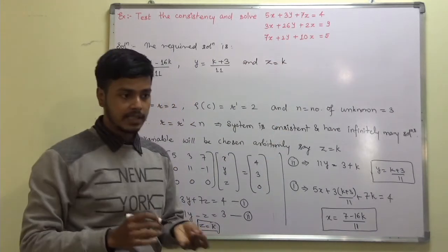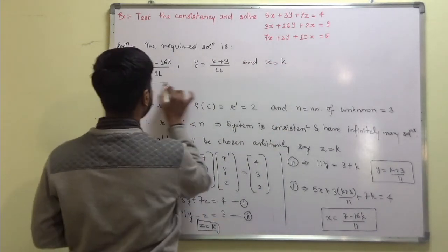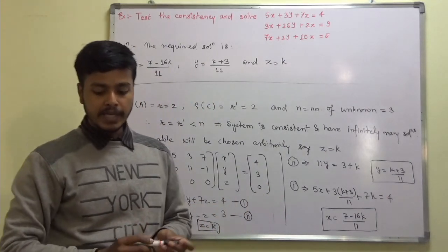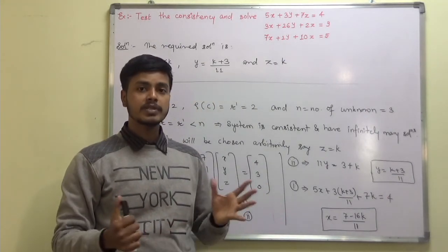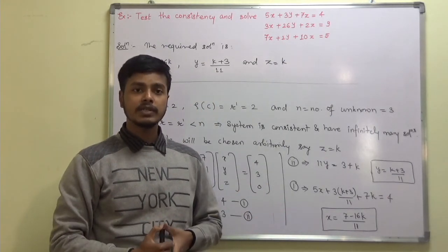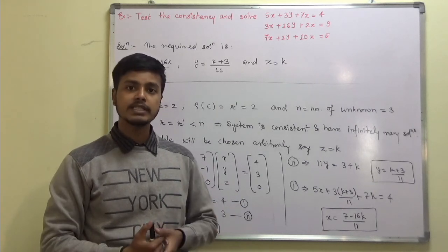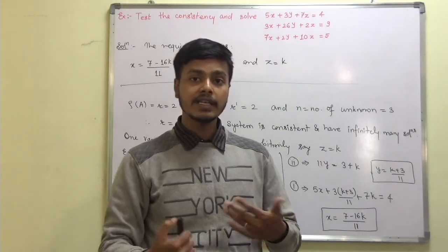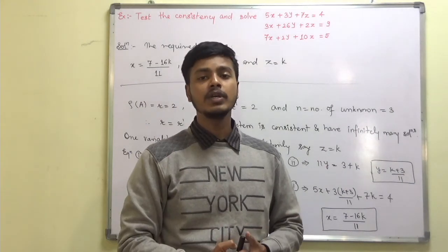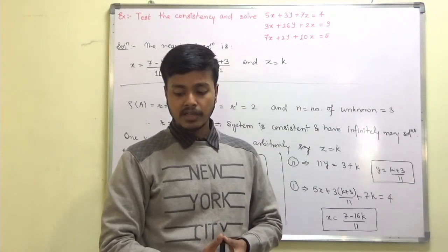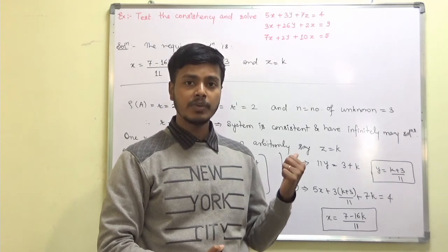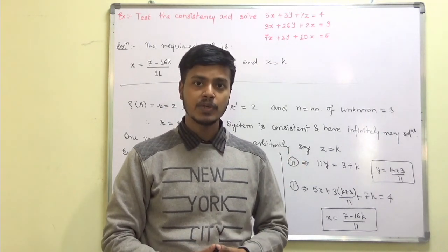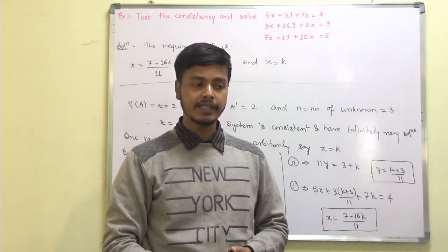So the required solution is: X = (7 − 16K) / 11, Y = (K + 3) / 11, and Z = K. This is the required solution for the given problem. I hope this problem is clear to you. Thank you for watching this learning video. In the next learning video, we are going to take a problem on the same topic but with a different variety. Thank you and happy learning.